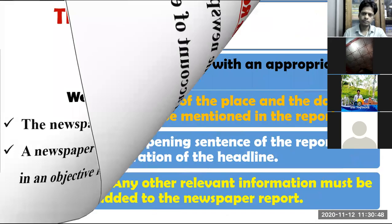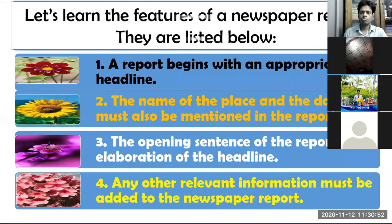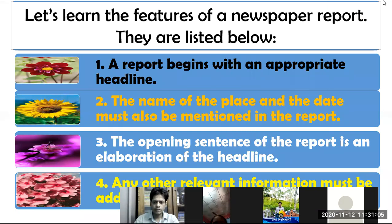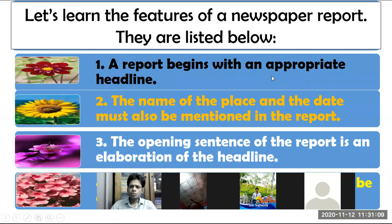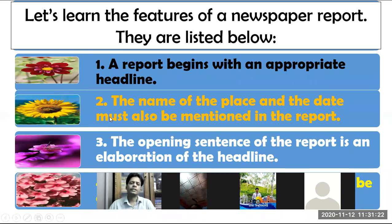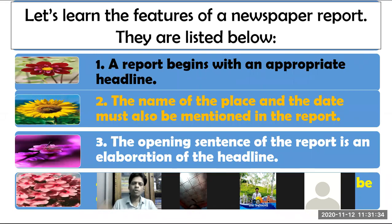This is very important. Now we will learn how to write a report, or let's learn the features of a newspaper report. They are listed below. First: a report begins with an appropriate headline — this is very important. Second: the name of the place and the date must also be mentioned in the report. As a journalist, as a report writer, you have to mention the name of the place and the date.